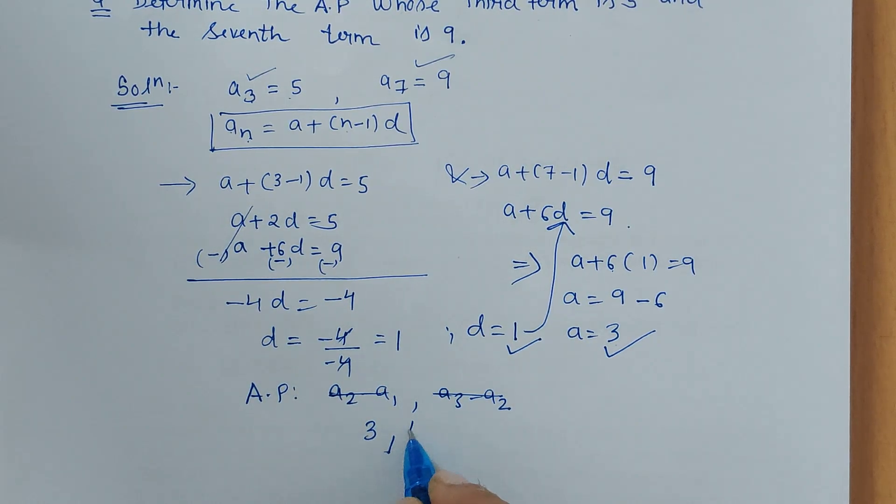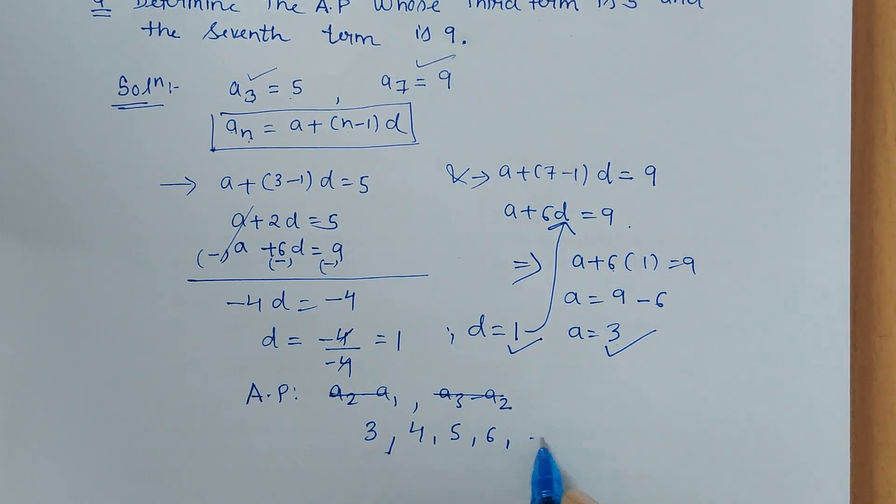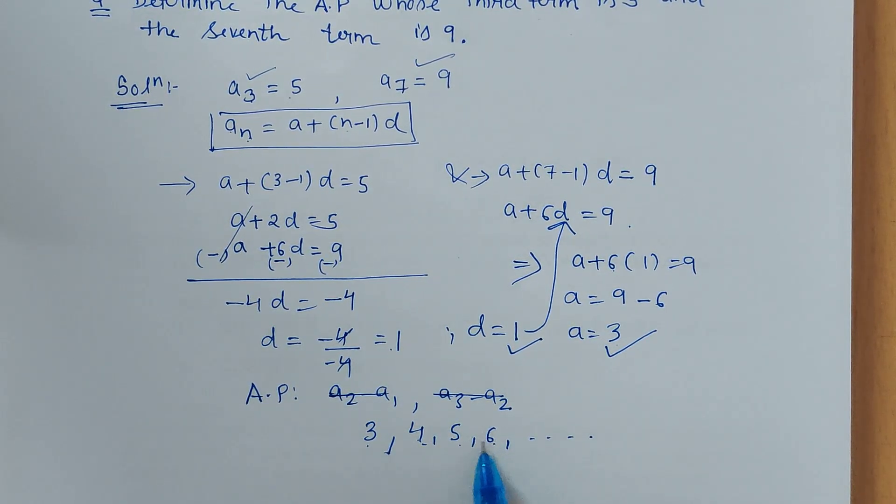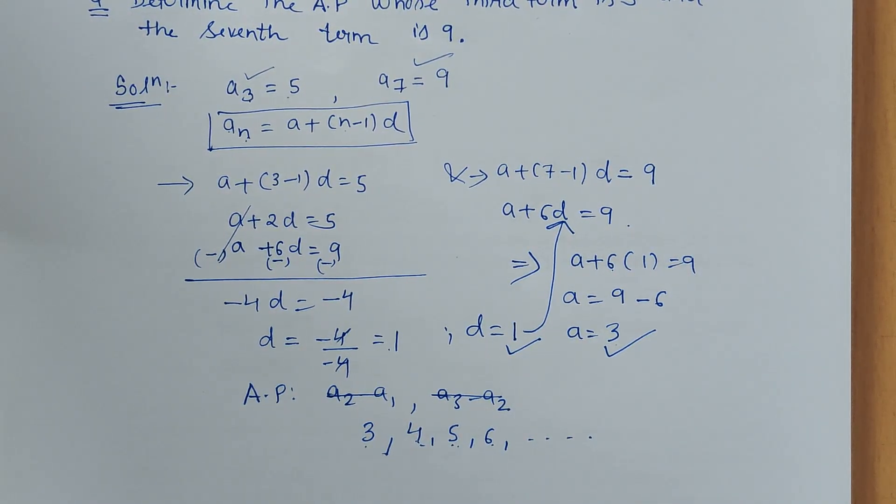You can easily check we get the common difference 1. Four minus 3 is 1, five minus 4 is 1, six minus 5 is 1. Thank you and have a nice day.